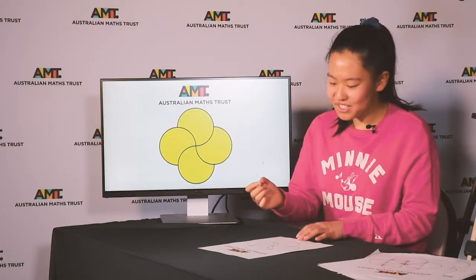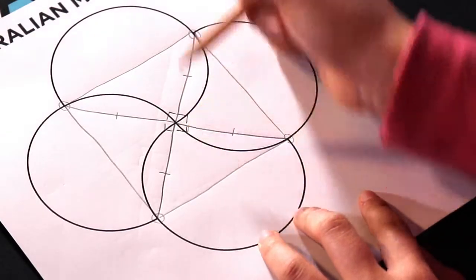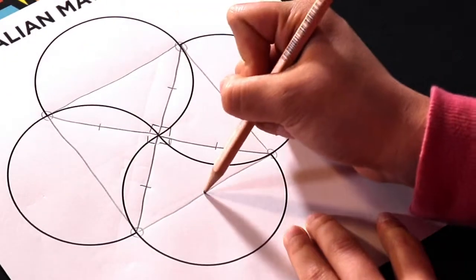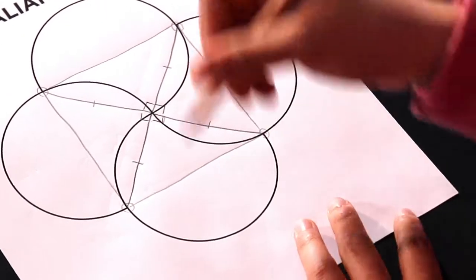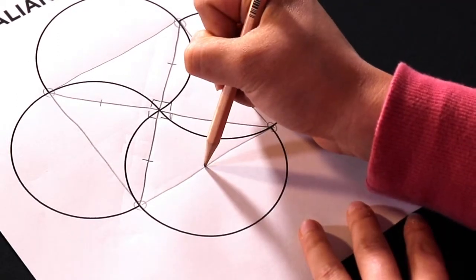So it turns out because this angle is 90 degrees, the center of each of these circles lies on the sides of these squares.